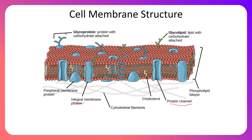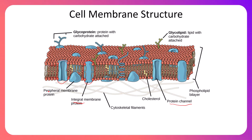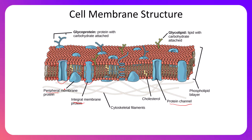Looking at proteins embedded within the membrane, there are two divisions. There are proteins like the channel proteins that span the entire membrane — these are called integral proteins, completely integrated within the thickness of the membrane. And there are proteins that are just on the periphery, on one side, that don't span through the entirety of the membrane — we call those peripheral proteins. Integral proteins make it all the way through; peripheral proteins are only on one side. Peripheral proteins can be on the interior or exterior of the cell.